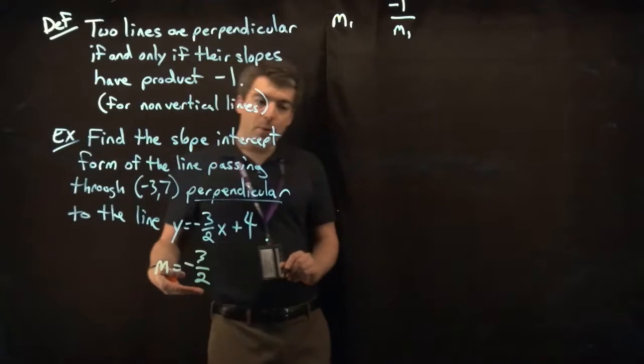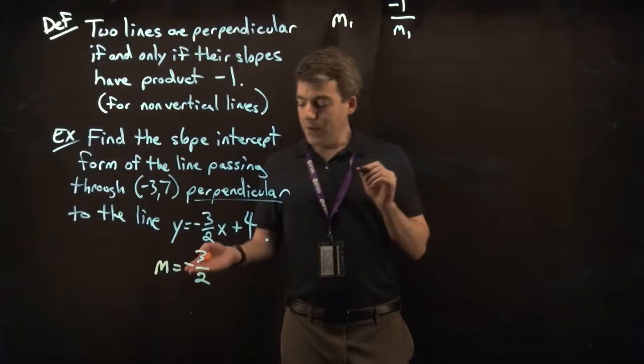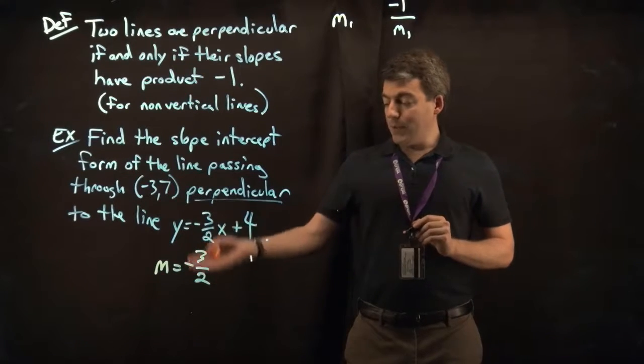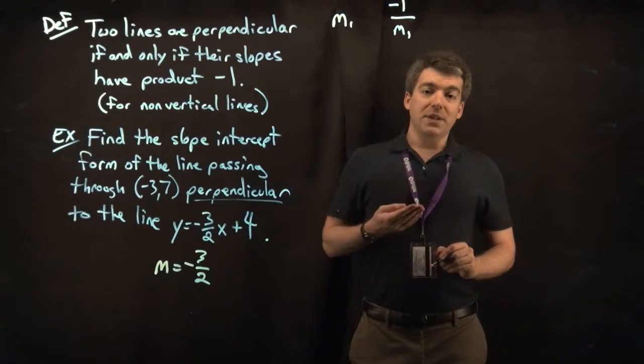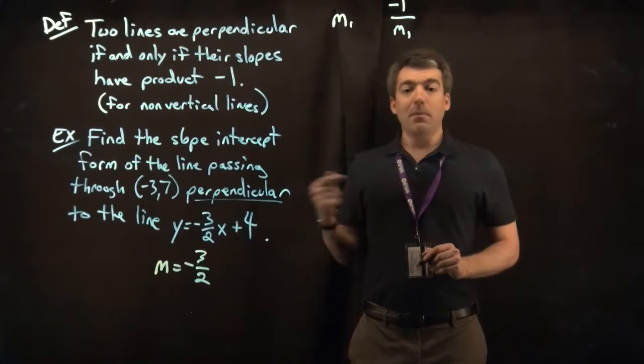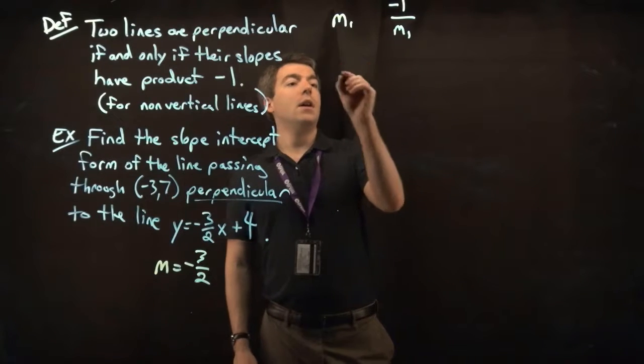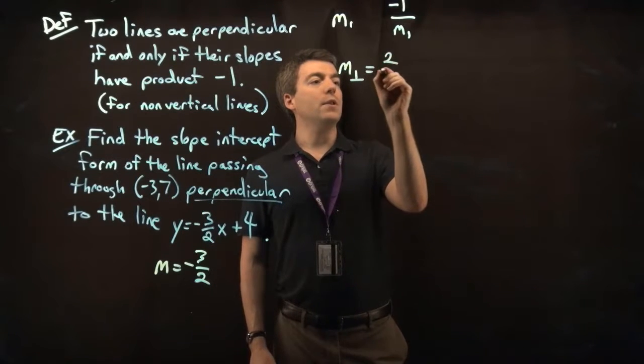Now the slope of the line perpendicular to this would be the opposite reciprocal. So what is the opposite reciprocal of negative 3 halves? Well, we take its reciprocal, we'll get negative 2 thirds. Then we also take its opposite, so it becomes plus 2 thirds. So the slope of the line perpendicular is going to be 2 thirds.